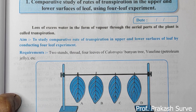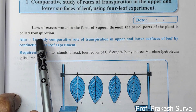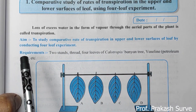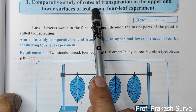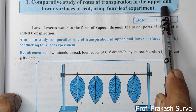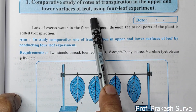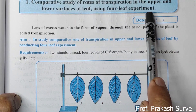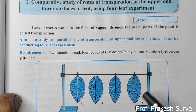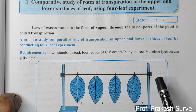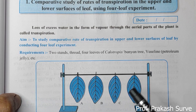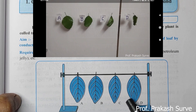Welcome dear student. In this video of the experiment on comparative study of rates of transpiration in upper and lower surface of a leaf using the four leaf experiment, we'll learn about the answers to the questions given in this practical book. How to perform the experiment is covered in another video; here we'll focus only on the question answers.